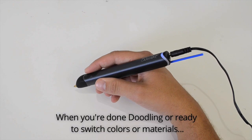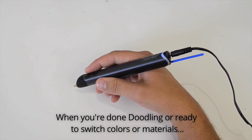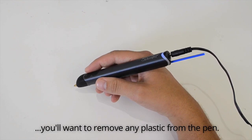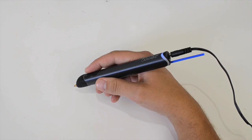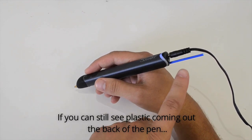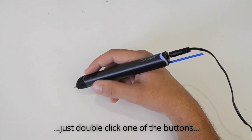Reversing plastic: When you're done doodling or ready to switch colors or materials, you'll want to remove any plastic from the pen. If you can still see plastic coming out the back of the pen, just double-click one of the buttons